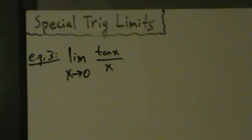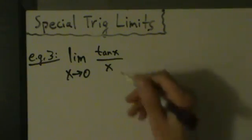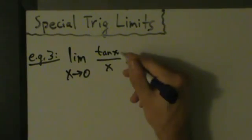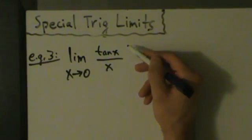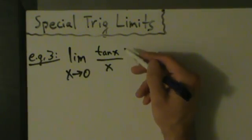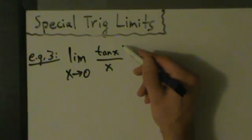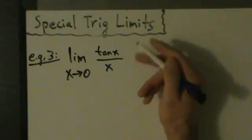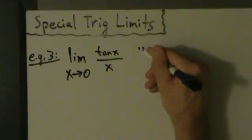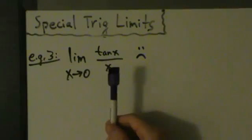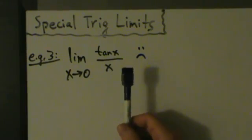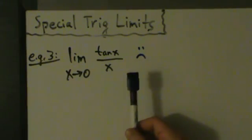If we try direct substitution — always the first thing we should do — we get tangent of 0 divided by 0. Remember, the tangent of 0 equals 0. So direct substitution gives us 0 divided by 0. If we try to factor, there's nothing good to factor. If we try algebraic manipulations, nothing really works.